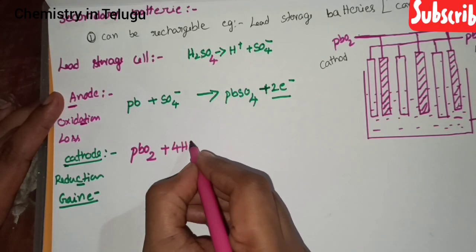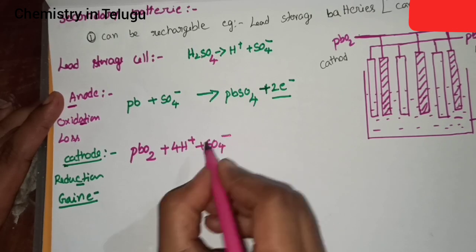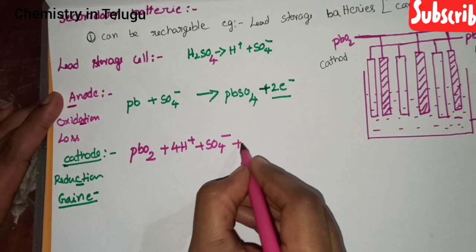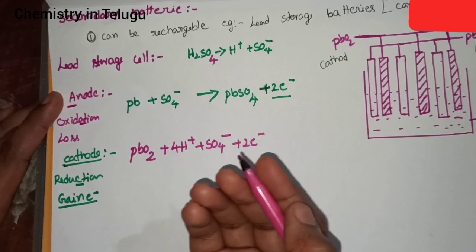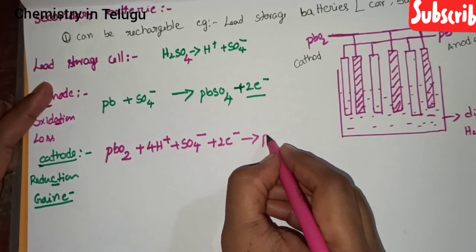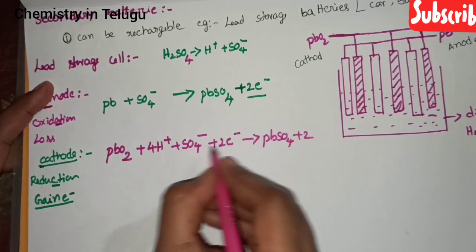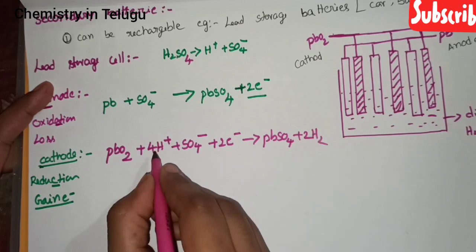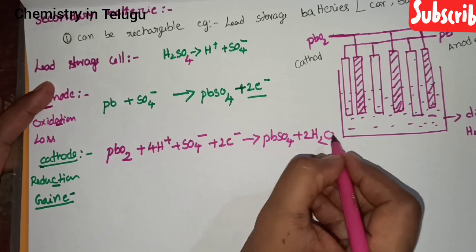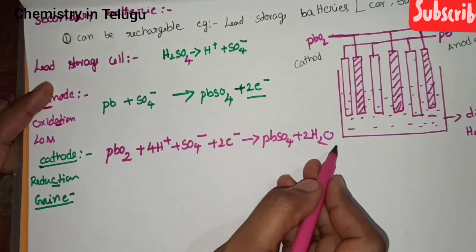At the cathode: 4H⁺ ions and SO₄²⁻ are present. Two electrons are gained at the cathode. Lead sulfate (PbSO₄) forms, and at the same time 4H⁺ combines with oxygen to form 2H₂O — water molecules.